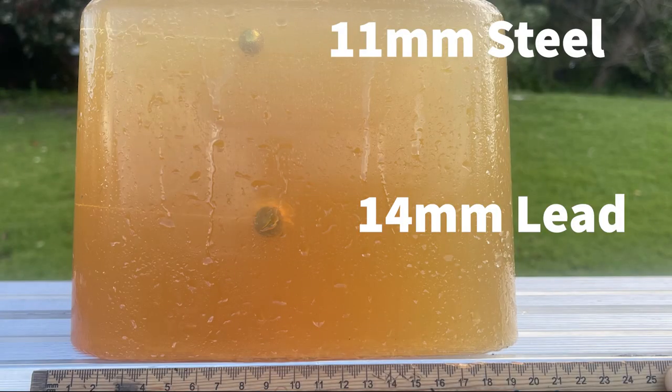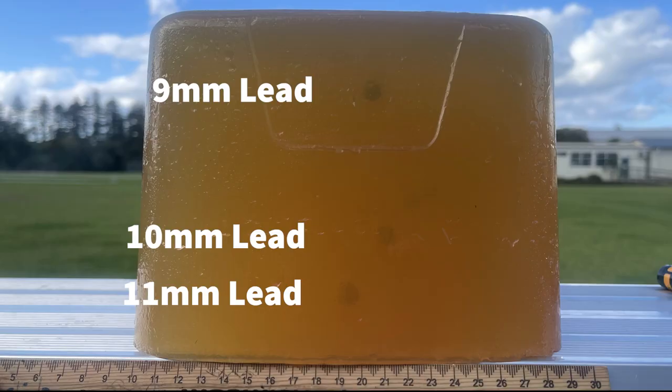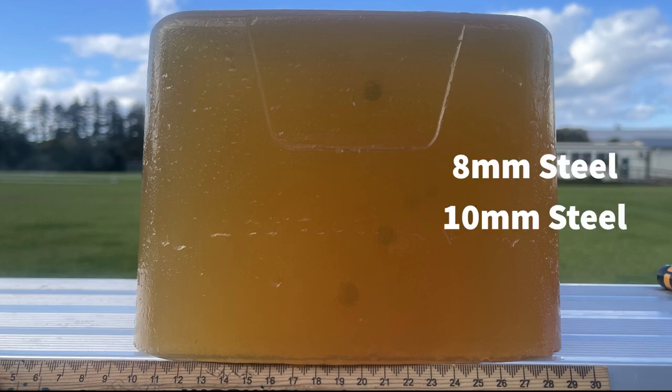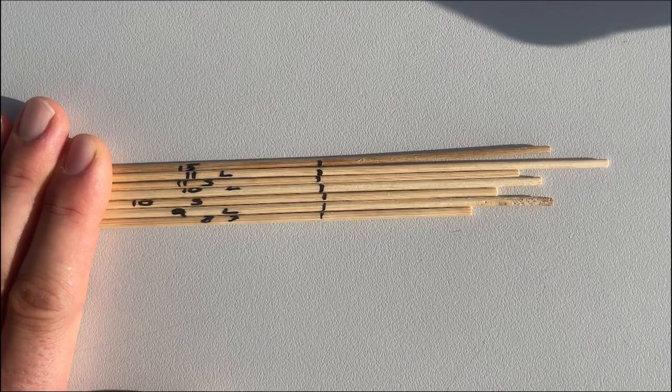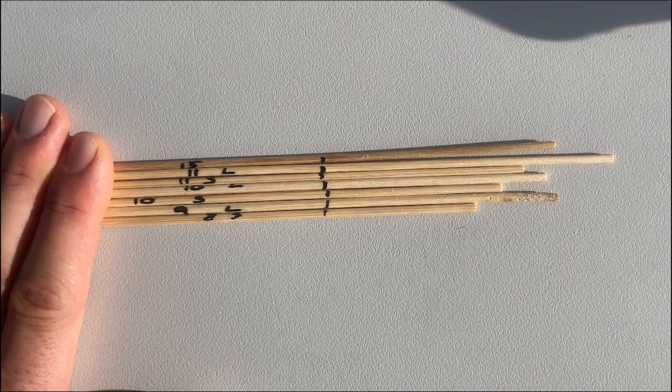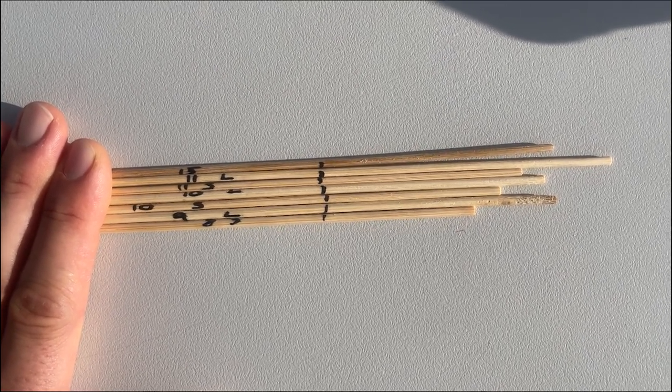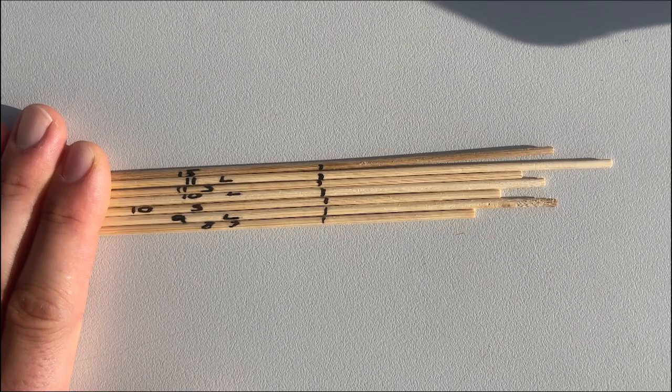So here are the results. Now you can see that my ballistic gelatin is a little bit more opaque than the stuff that you would buy, the fancy stuff, so I've labeled the shots. And just real faintly right in the middle of the block there you can just see the 8mm and the 10mm steel.